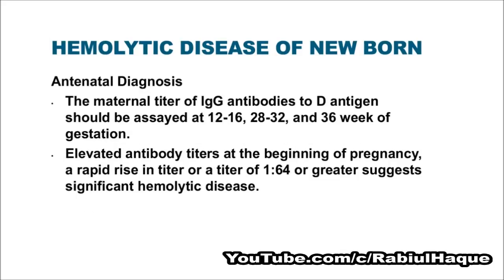The maternal titer for immunoglobulin G antibodies to D antigen should be assayed at 12 to 16, 28 to 32, and 36 weeks of gestation. Elevated antibody titers at the beginning of pregnancy, a rapid rise in the titer, or a titer of 1:64 or greater will suggest significant hemolytic disease.